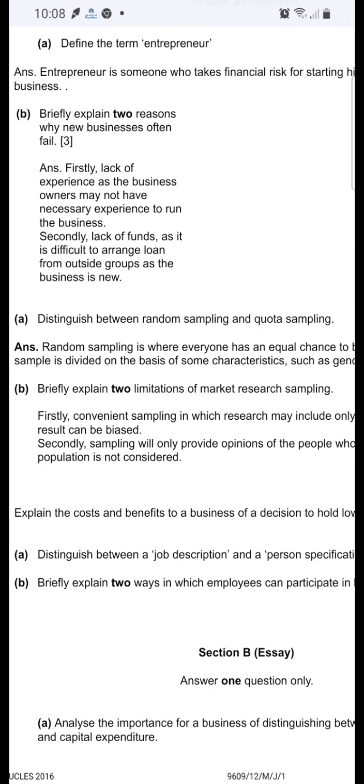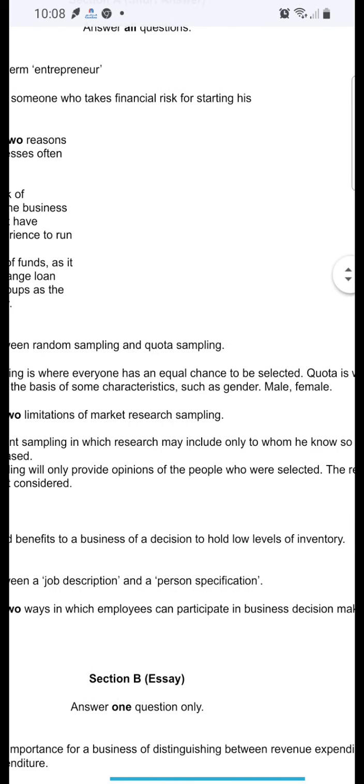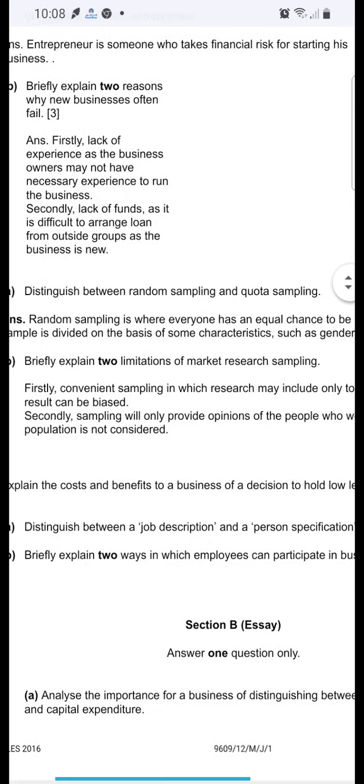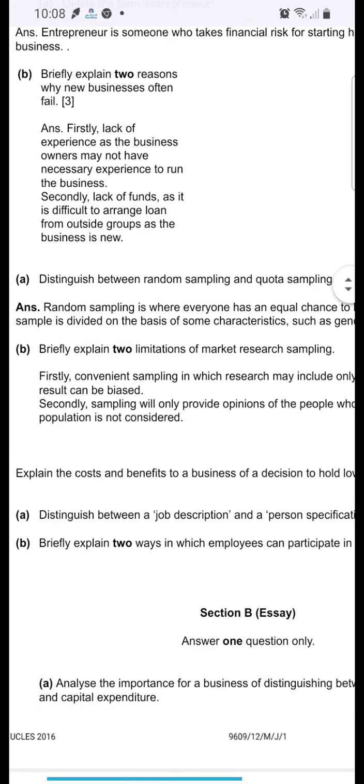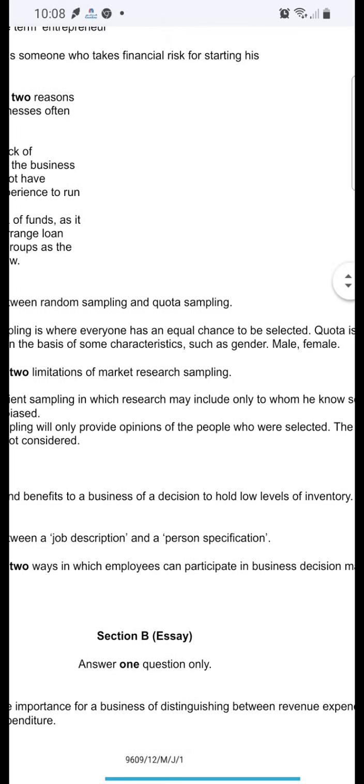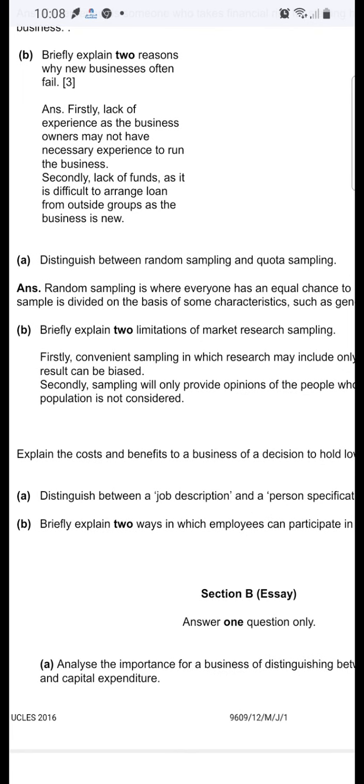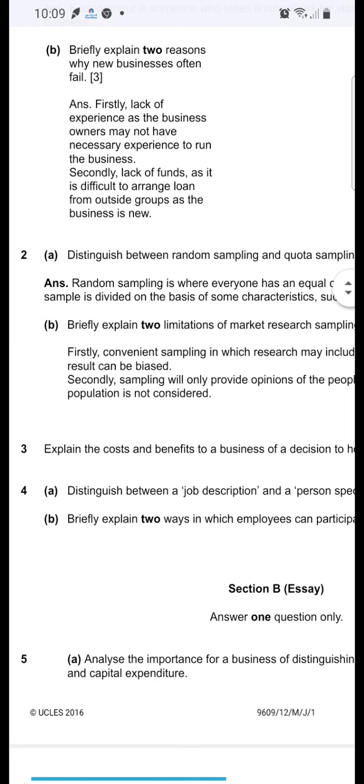Part B: briefly explain two limitations of market research sampling. The limitation is that research is sometimes going to be biased if the sample is not selected carefully. For example, firstly, convenient sampling is in which the researcher may include only those whom he knows. Secondly, sampling will only provide opinions of the people who were selected, so the rest of the population is not considered.